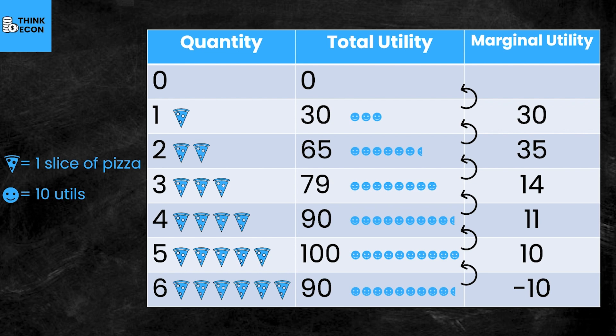We call this diminishing marginal utility. This happens because the value he receives from the first slice is high because he's so hungry. But as he continues to eat, each additional slice doesn't bring him the same satisfaction as the previous one. Eventually, he gets too full and it actually makes him worse off — we see this after the sixth slice. His optimal consumption to maximize total utility is at five slices. For the math-inclined, marginal utility is simply the slope of the total utility function, which means total utility is maximized when marginal utility is equal to zero.